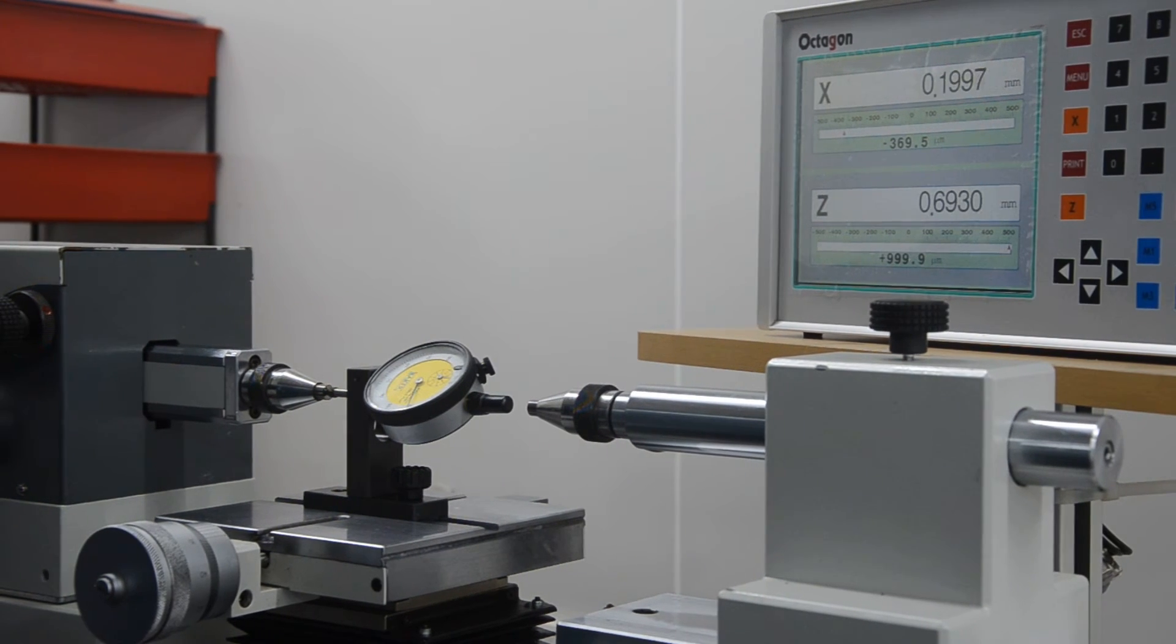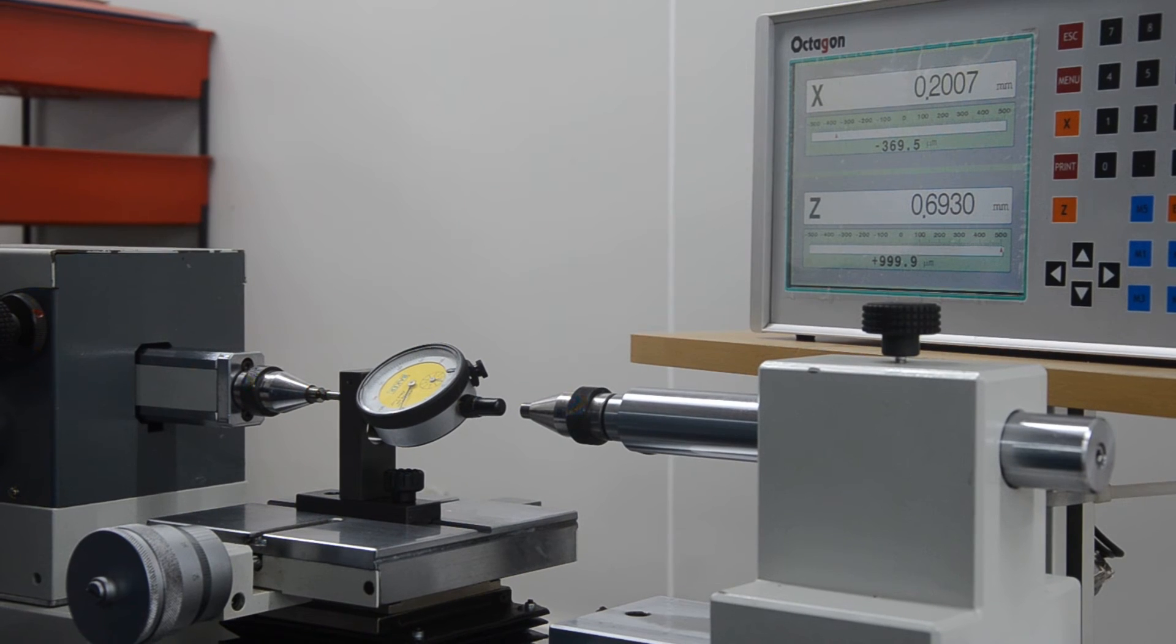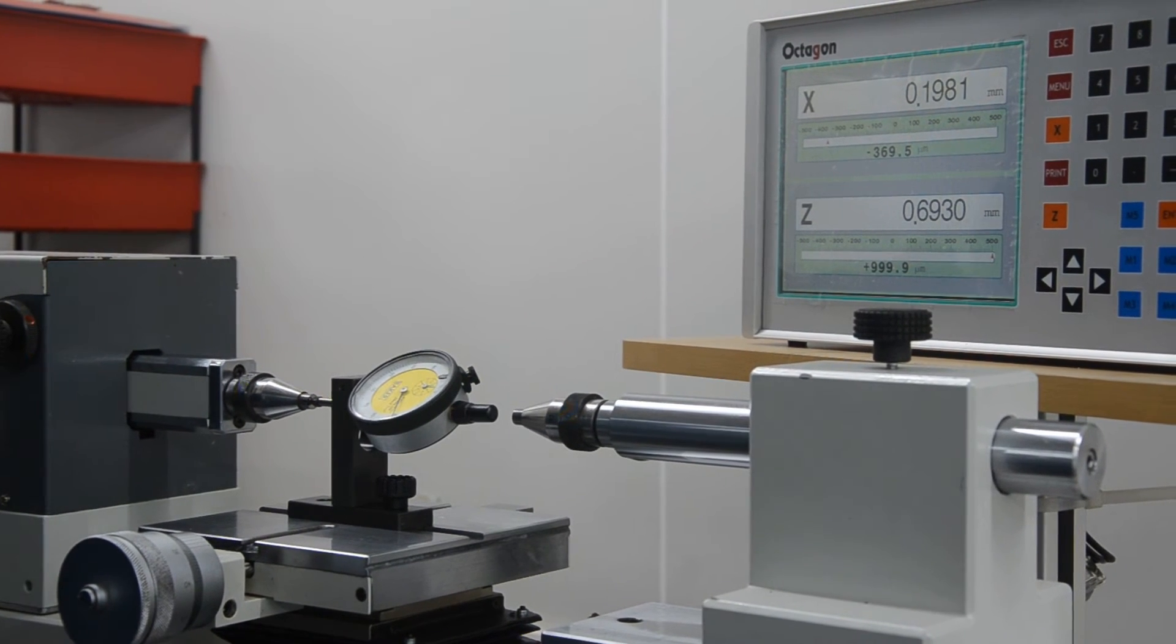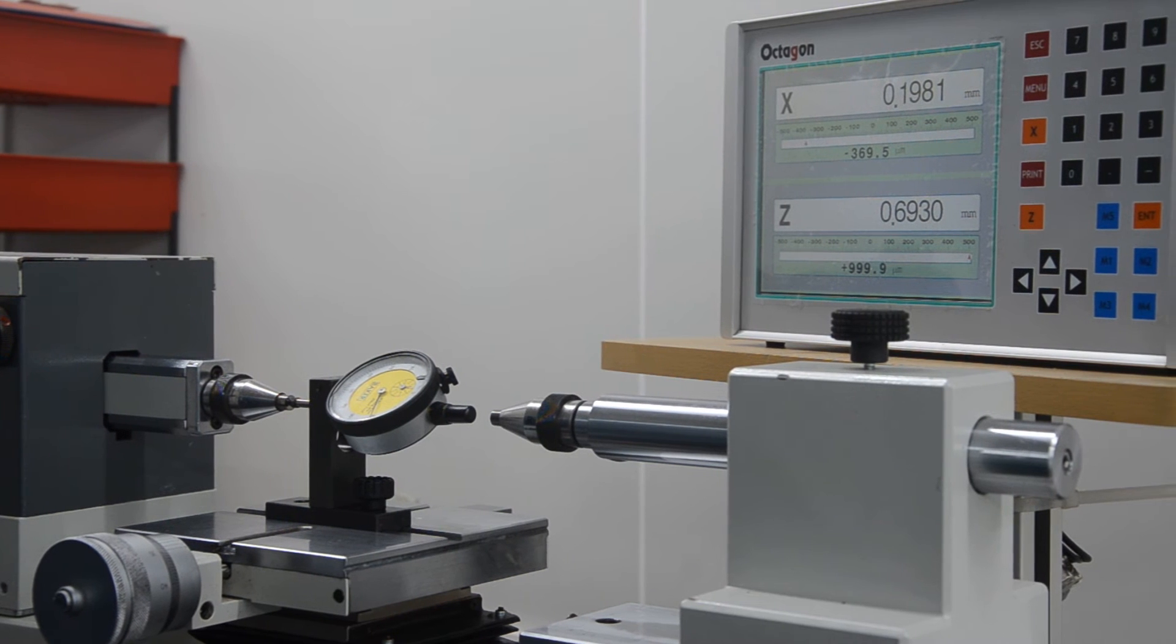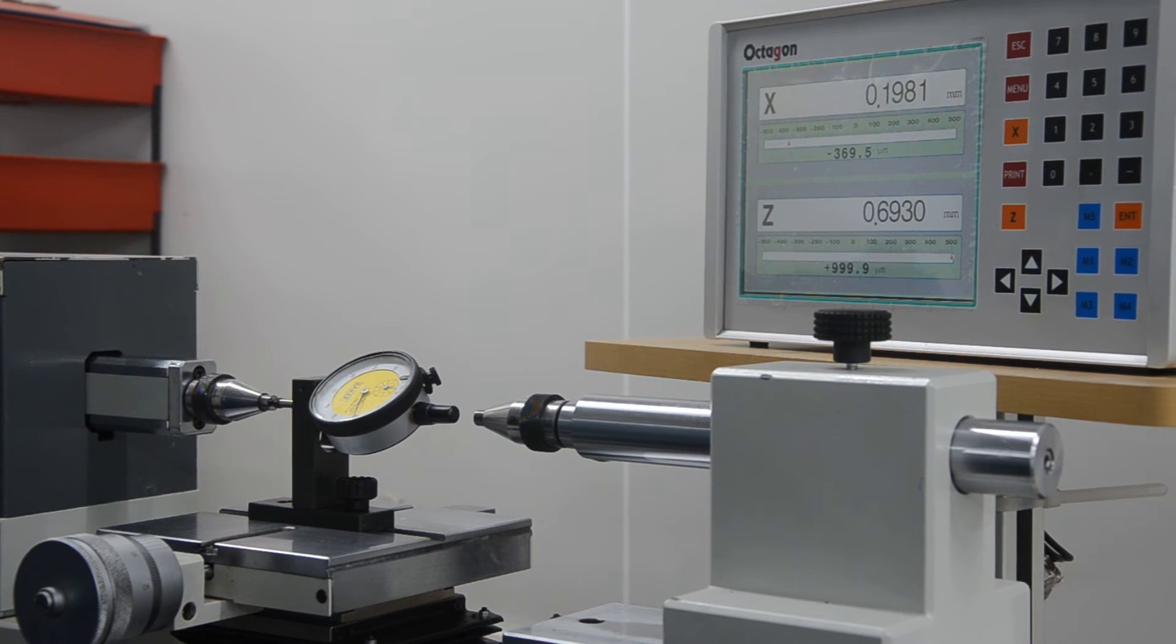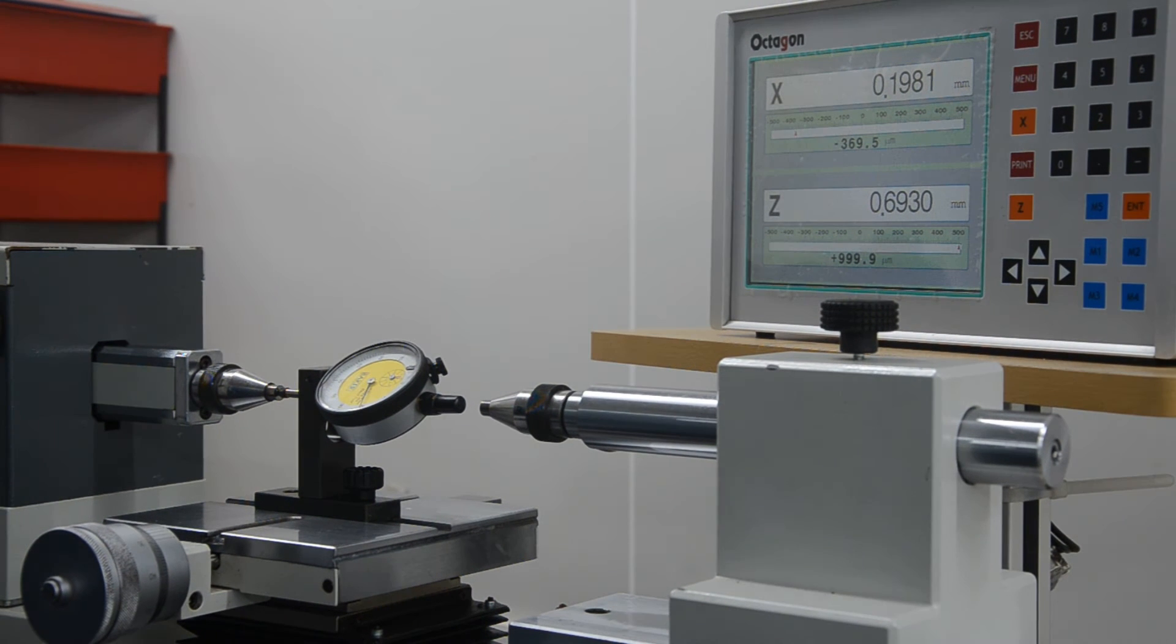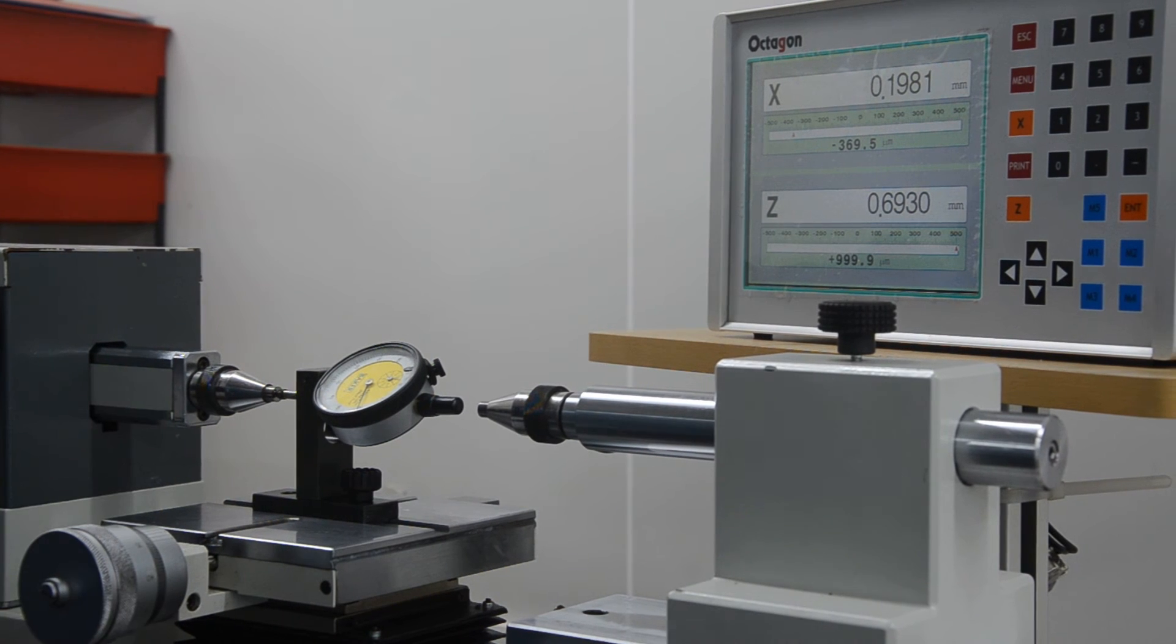Similarly, on 0.2 mm, the display is showing the reading of 0.1981 mm. That means 1.9 micron on the plus side is the error present on this particular point.